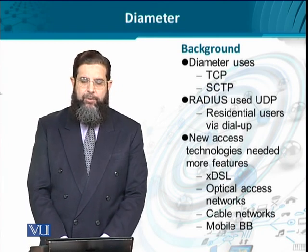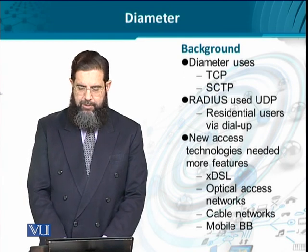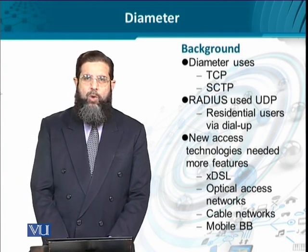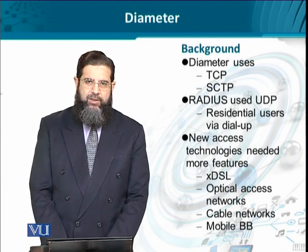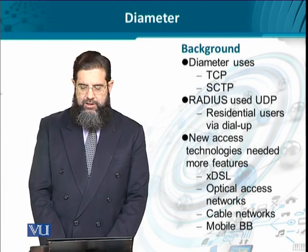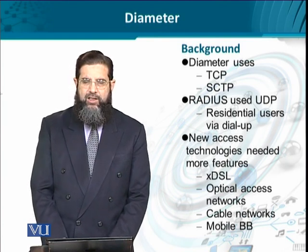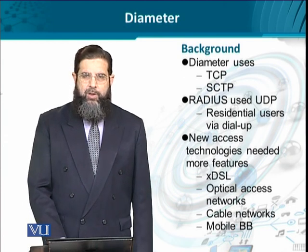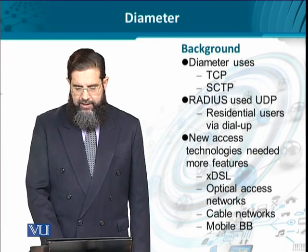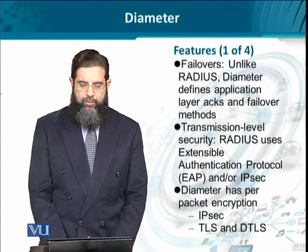Diameter is more reliable than RADIUS because it uses TCP and SCTP (Streaming Control Transmission Protocol) unlike UDP. The scope of RADIUS was only limited to individual subscribers connecting to network services using dial-up modems. New access technologies like DSL, mobile broadband, optical, and cable all necessitated new functionality to keep up with their high-speed bandwidth and service delivery potential, which had to be incorporated into a new protocol — and here it is Diameter with its own set of rich features.